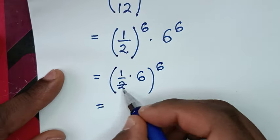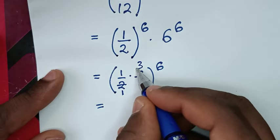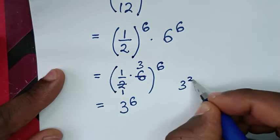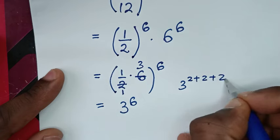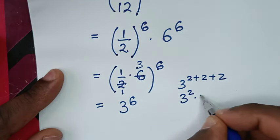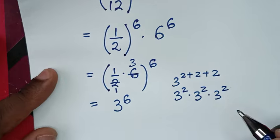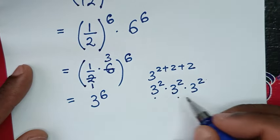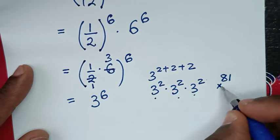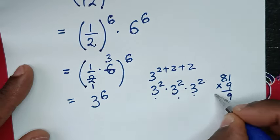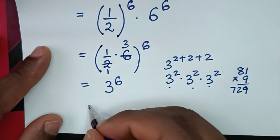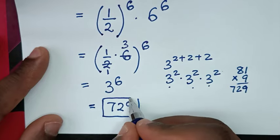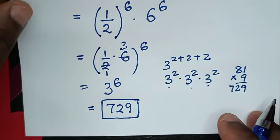Simplifying: 2 cancels with 6 to give 3, so we get 3 power of 6. Now, 3 power of 6 equals 9 times 9 times 9 times 9 times 9 times 9. We get 9 times 9 is 81, and continuing the multiplication, 3 power of 6 equals 729.